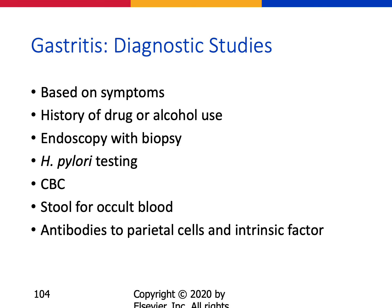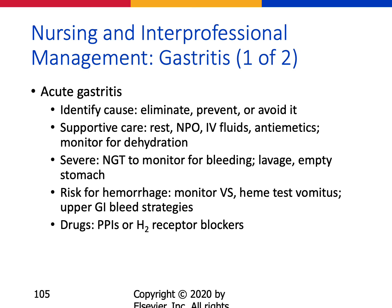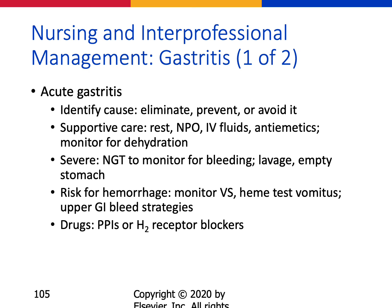Diagnostic studies for gastritis are based on symptoms, history of drug or alcohol use, endoscopy, H. pylori testing, and stool for occult blood. For acute gastritis, identify and avoid the cause, then support symptoms with IV fluids, rest, and monitoring for dehydration. PPIs or H2 receptor blockers are used for any acid-related complications. For chronic gastritis, also stop smoking and change to six small meals a day with non-irritating foods.